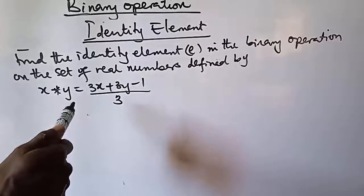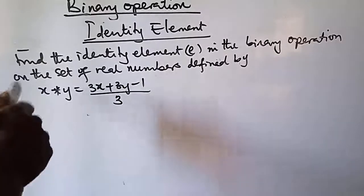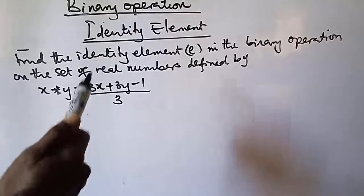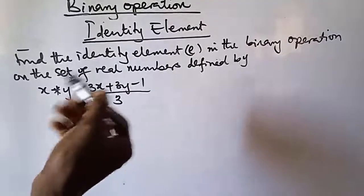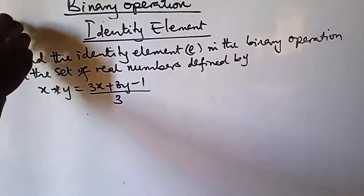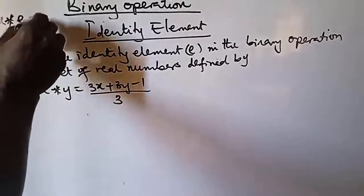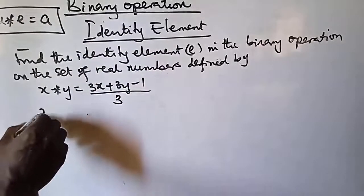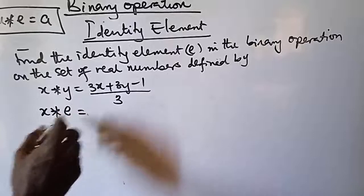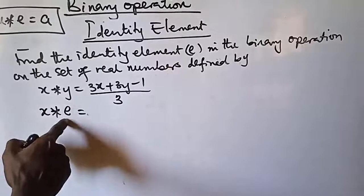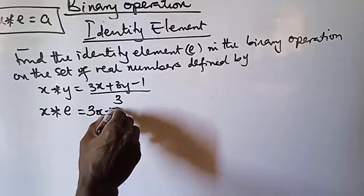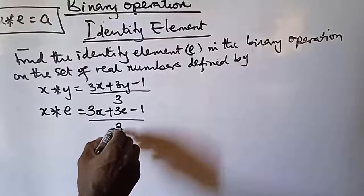As we said earlier, if an identity element is operated on an element, it gives you the same element. So a operation e gives us a. Applying this rule here, x operation e gives us x. Replacing y with e, we get (3x + 3e − 1) / 3.